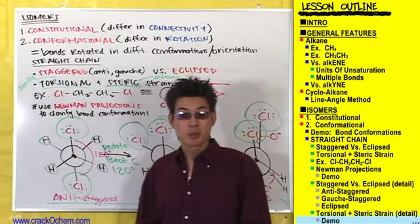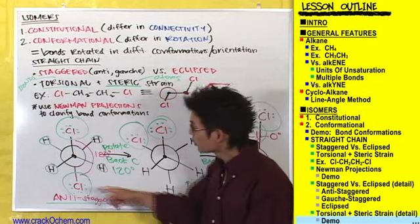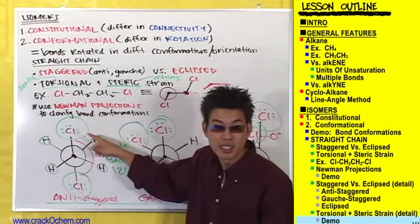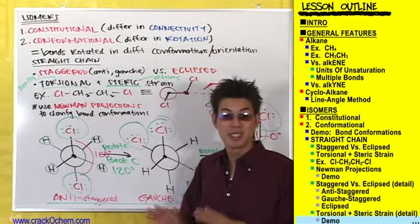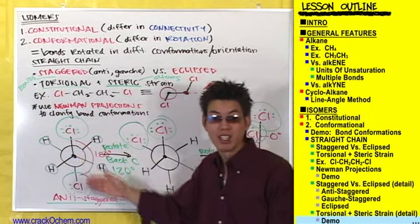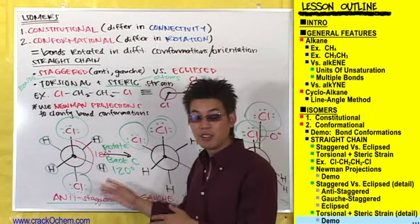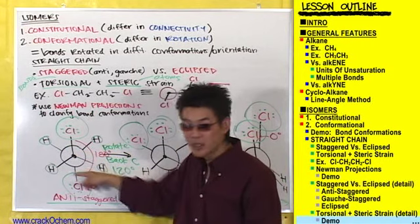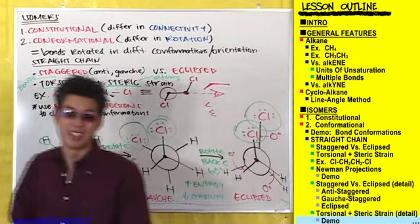One other thing your teacher might ask you to do when drawing Newman projections is to rotate the front carbon — the dot — instead of the back carbon like we did here. That's totally fine, because this is the exact same thing. Instead of rotating the back carbon and leaving the front carbon alone, you rotate the front carbon and leave the back carbon alone. It works the exact same way.